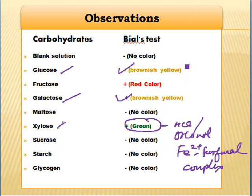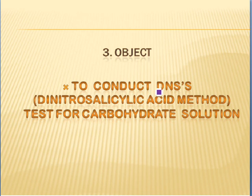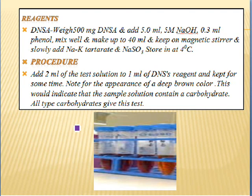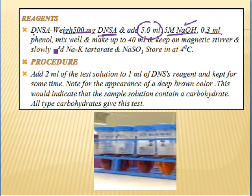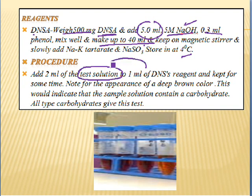Another very common test for all carbohydrates is the DNS test. DNS (dinitrosalicylic acid) method is a simple, sensitive, and adaptable method for handling a large number of samples at a time. To make the DNS reagent, we take 500 milligrams of DNS and add 5 ml of 5 molar NaOH, then add 0.3 ml of phenol, and make the volume up to 40 ml. This is our DNS reagent.